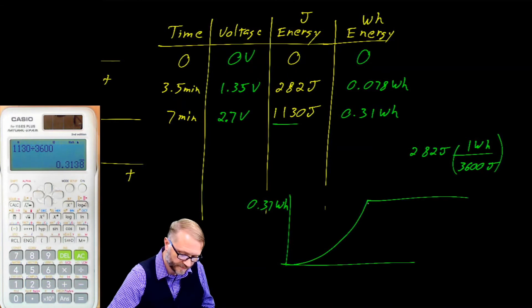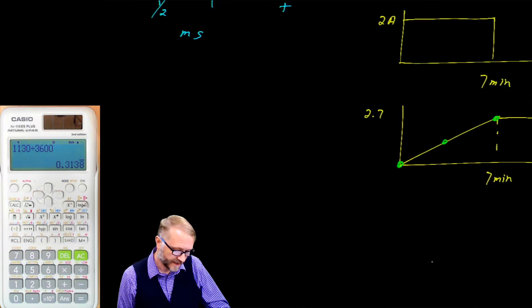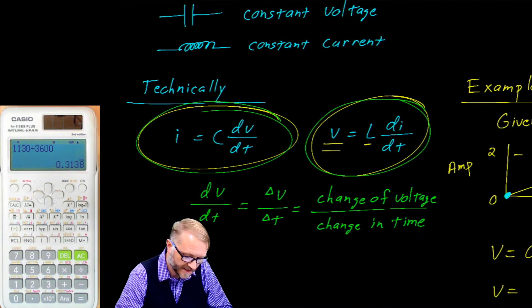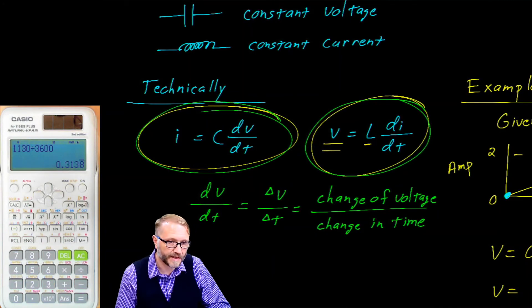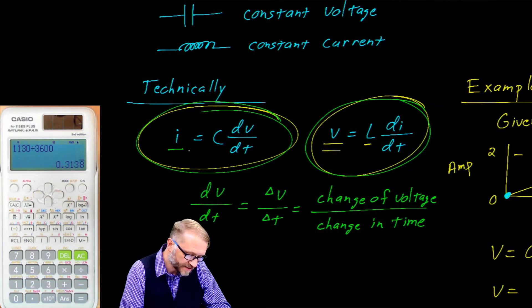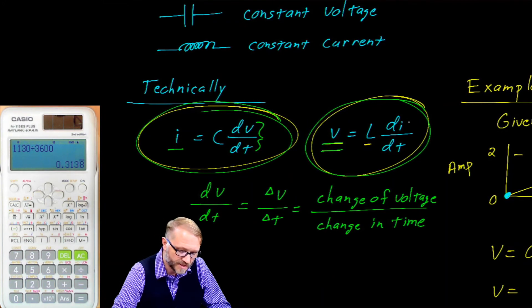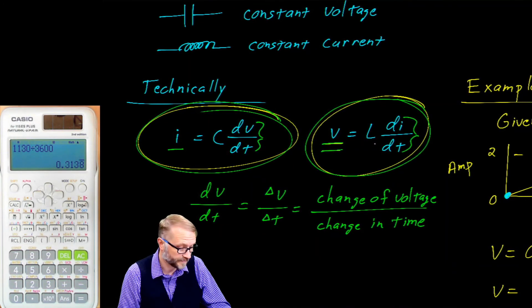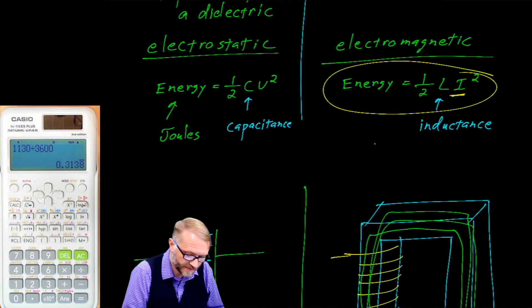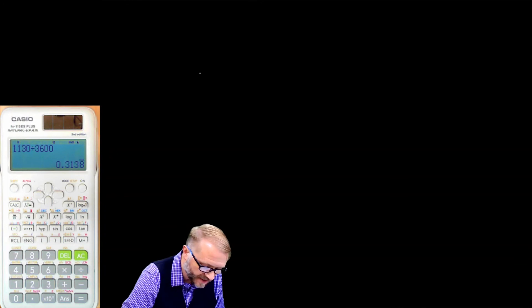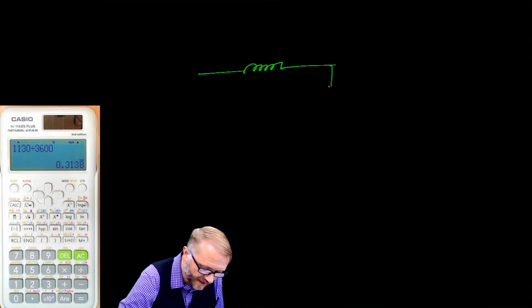To recap: we have the equations describing voltage and current relationships for capacitors and inductors. The current on a capacitor depends on how fast you're changing the voltage; the voltage on an inductor depends on how fast you're changing the current. These energy storage equations — ½CV² and ½LI² — are foundational. Inductors and capacitors combine in series and parallel circuits just like resistors.